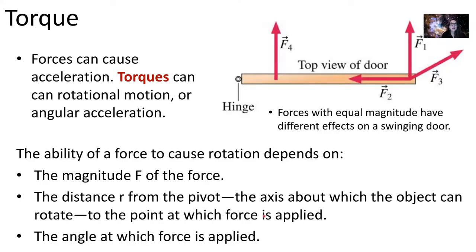So far we've seen that forces can cause acceleration when thinking about motion in one or two dimensions. But torques can cause rotational motion or an angular acceleration — an acceleration around a circle. The ability of a force to cause rotation depends on the magnitude of the force applied, the distance between the pivot point and the point where the force is applied. The pivot point is the axis around which our object will rotate when executing rotational motion.